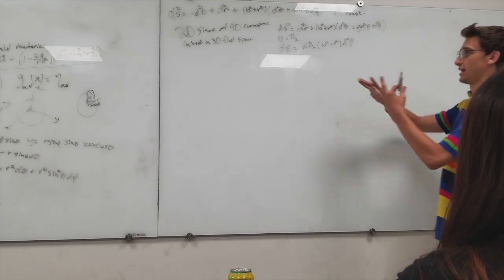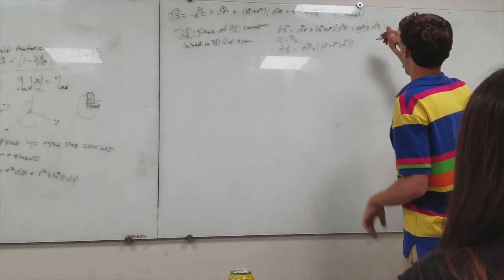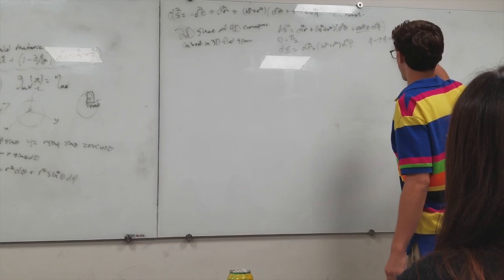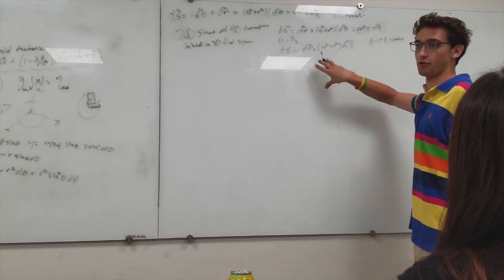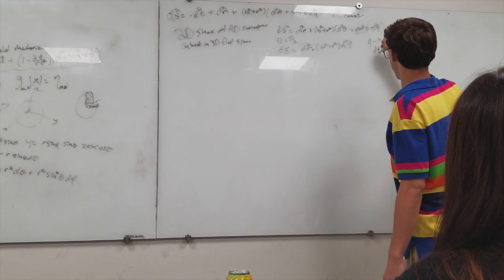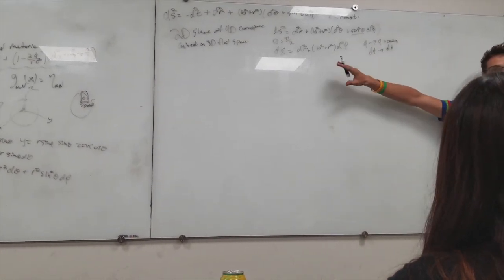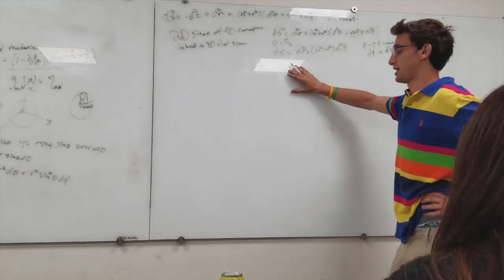We could just rewrite this as a surface. Sigma dr squared plus b squared plus r squared. So what's nice about this surface is that we could take phi to phi plus a constant. And then this metric will remain unchanged. So d phi goes to d phi still. So this is an axially symmetric spacetime.